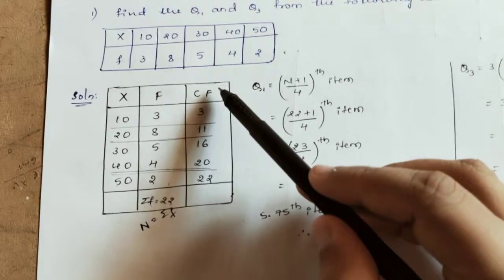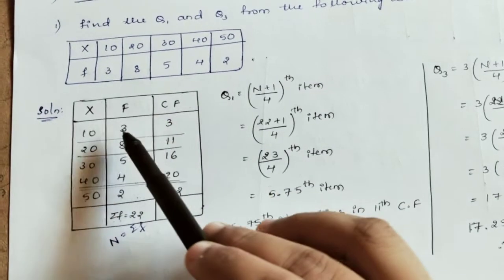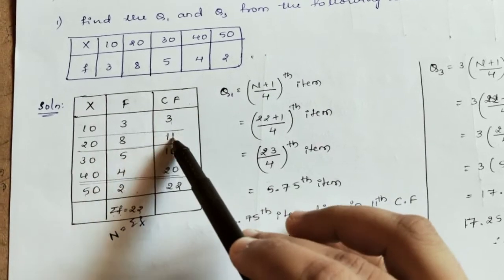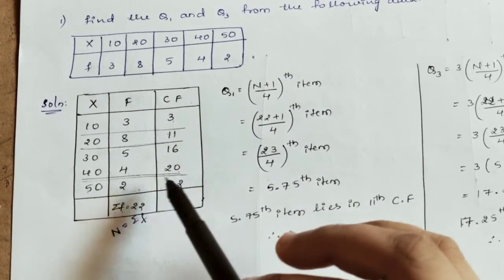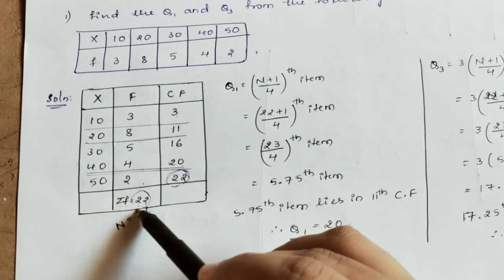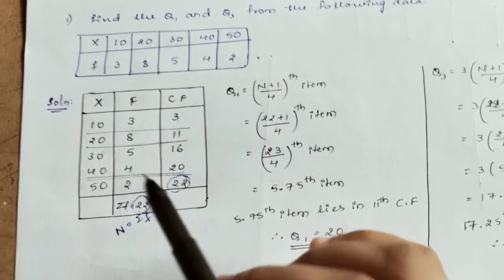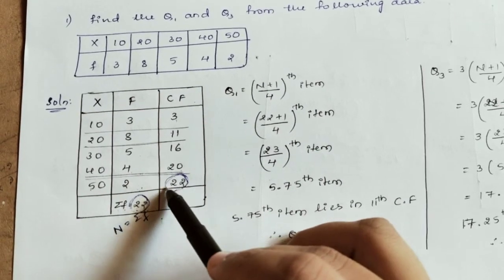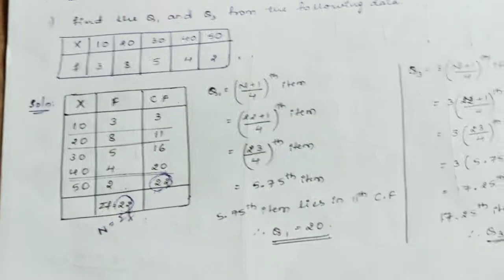Next step is to calculate cumulative frequency (C.F.). We calculate: 3, then 3 plus 8 is 11, 11 plus 5 is 16, 16 plus 4 is 20, and 20 plus 2 is 22. The last cumulative frequency value should equal the summation of F, which is 22.